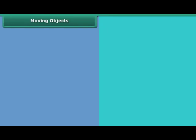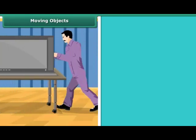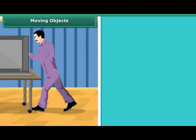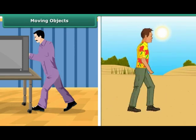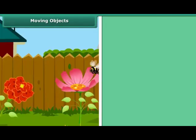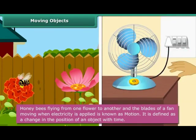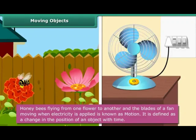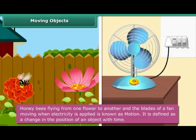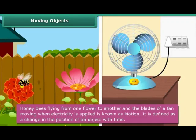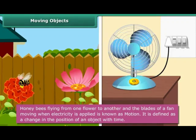Moving Objects. You will notice that there are objects that move when you apply force or are moving on their own. For example, you will see honeybees flying from one flower to another. So also, you will notice that the blades of a fan move when electricity is applied. This is known as motion. It is defined as a change in the position of an object with time.